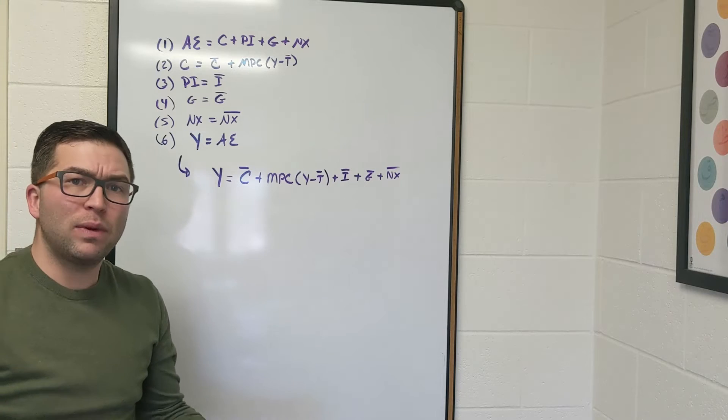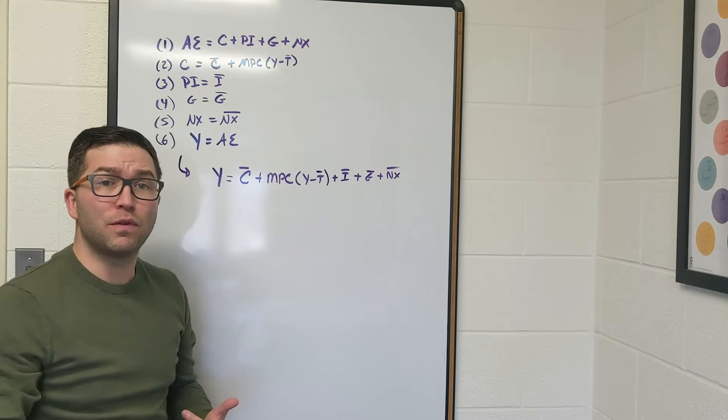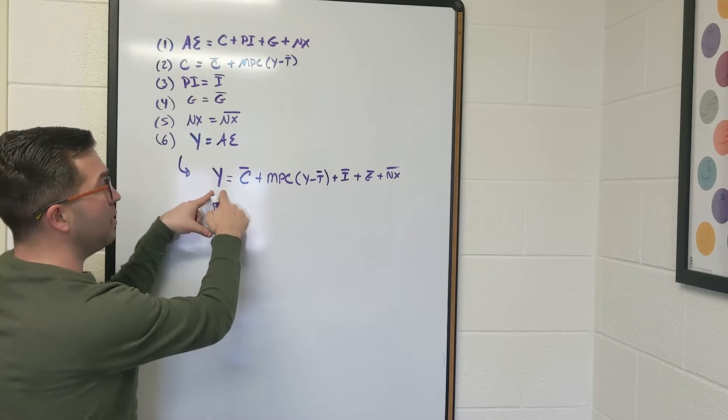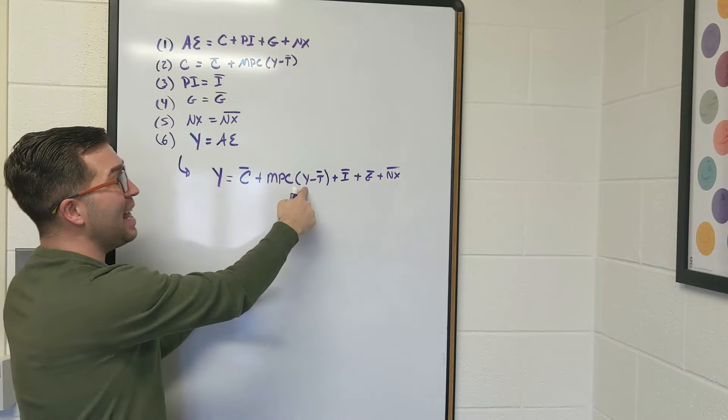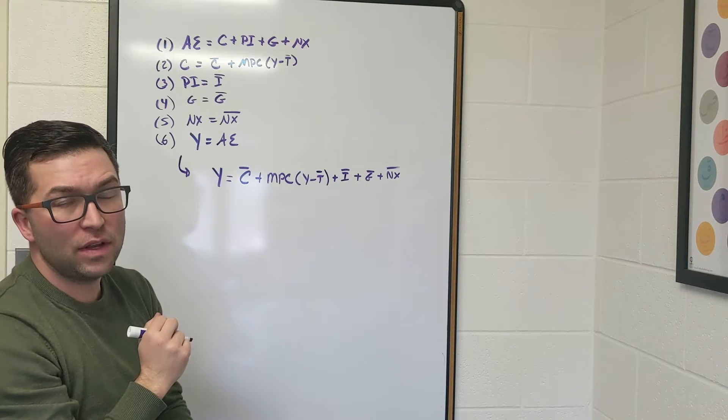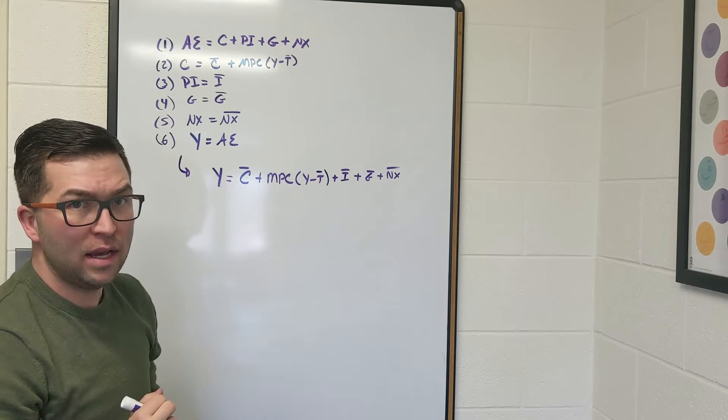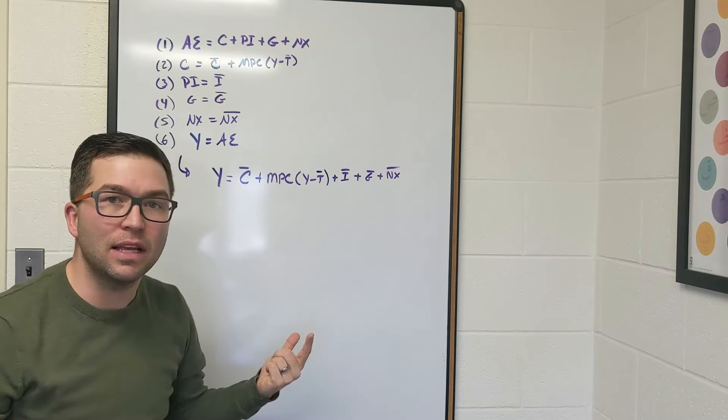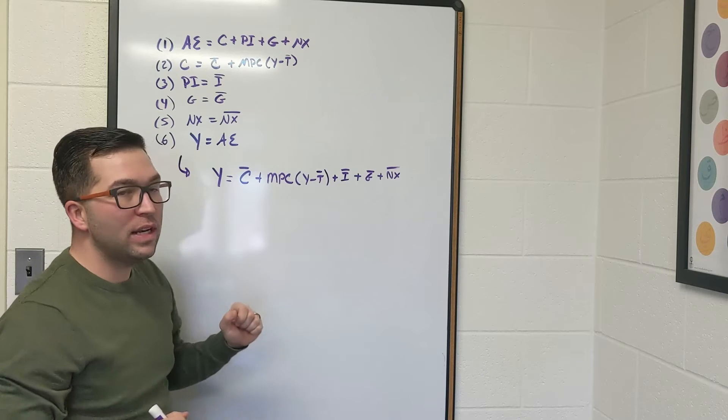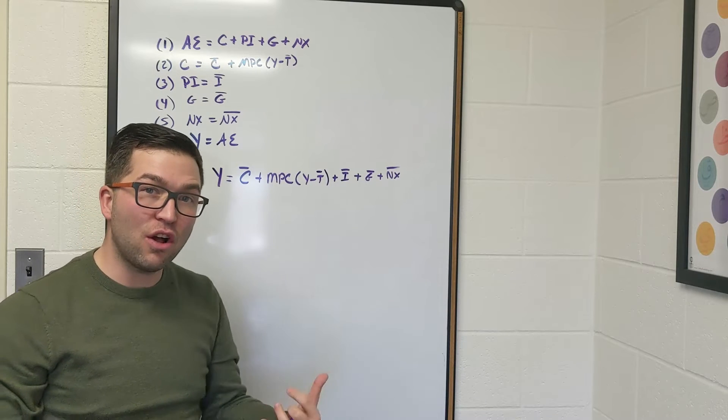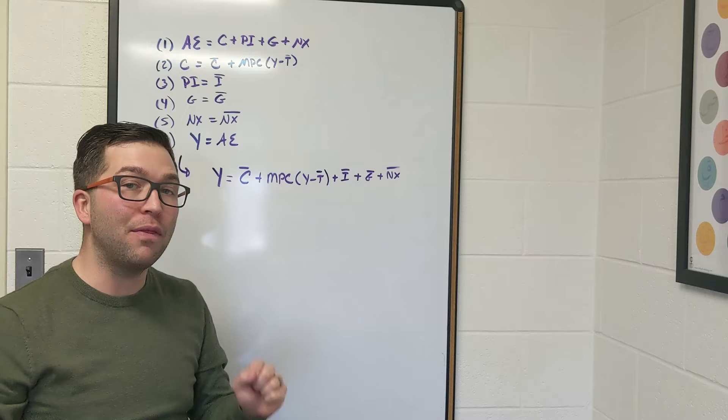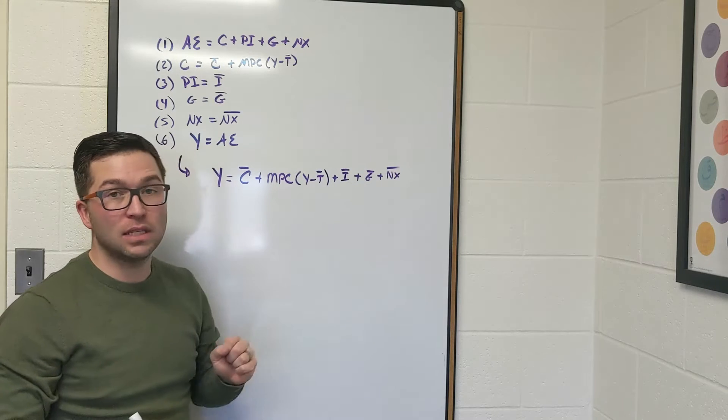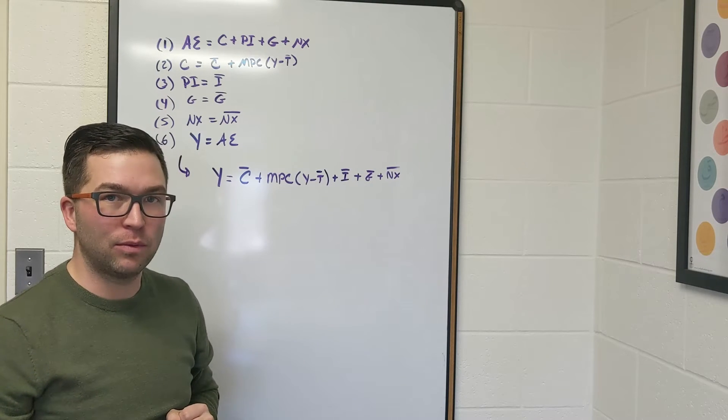And you might think that's where we need to stop, but we actually have to go a few steps further, because notice that real GDP is on the left-hand side and it's embedded there in the consumption function on the right-hand side, meaning that when this Y goes up, this one goes up, and it keeps cycling through. So what we need to do is isolate real GDP and solve for real GDP to figure out the level of real GDP that puts this model into macroeconomic equilibrium.